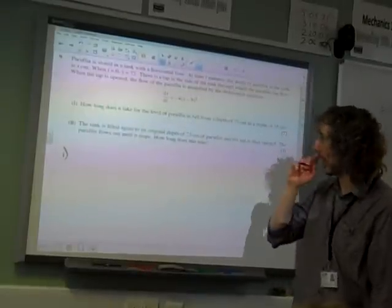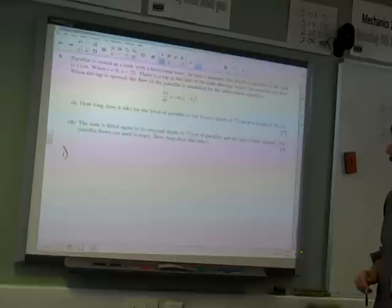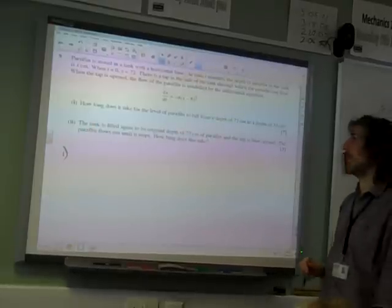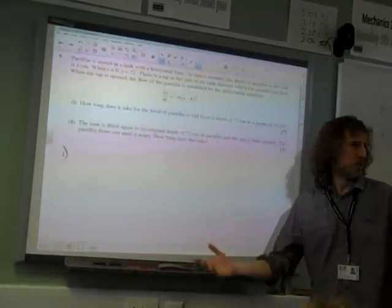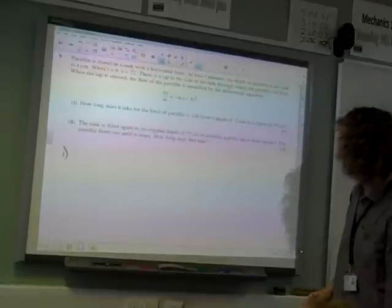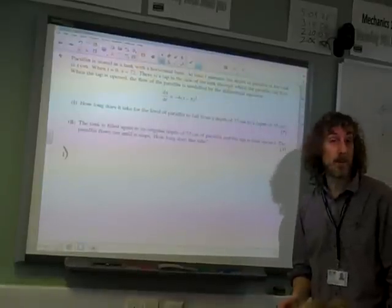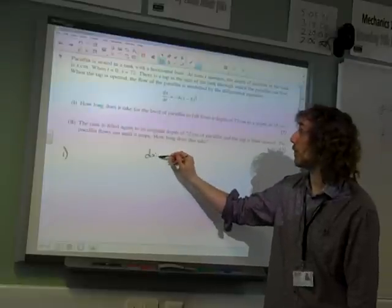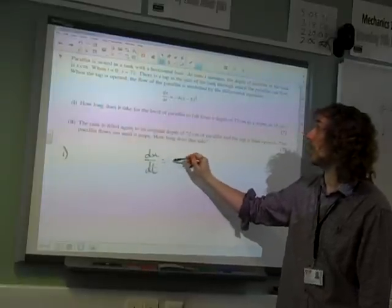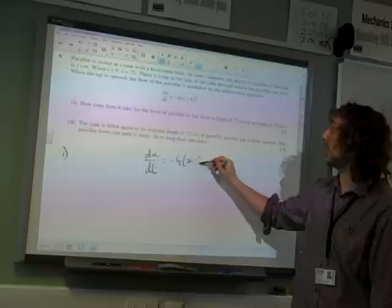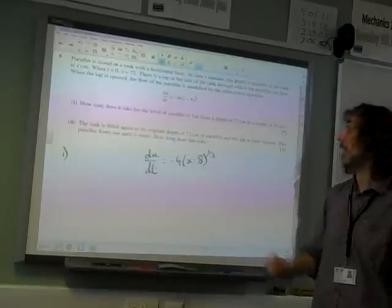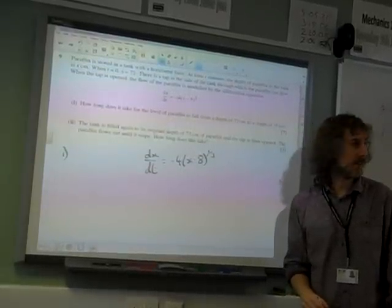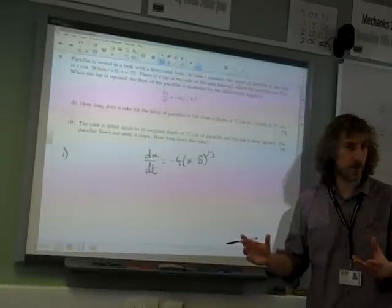dx by dt is that. How long does it take for the level of paraffin to fall from a depth of 72 to a depth of 35? It doesn't tell us that we have to do it, but we're going to have to solve this differential equation, aren't we? We've got dx by dt is minus 4(x minus 8) to the third. So it's a differential equation. We need to separate the variables and integrate all that stuff.